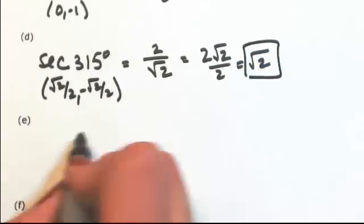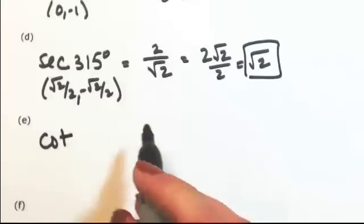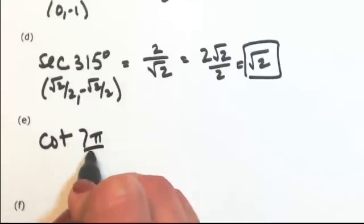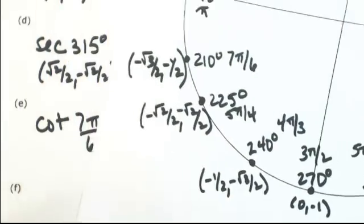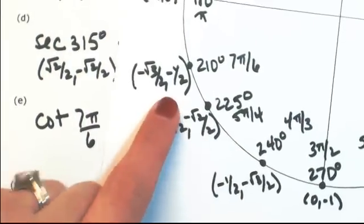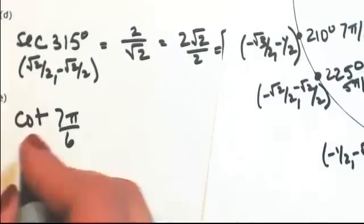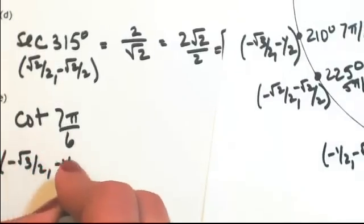Okay, let's say the cotangent of 7π/6. So locating 7π/6 on our unit circle, we have -√3/2, -1/2.